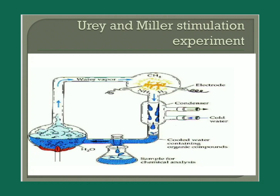On chemical analysis, you can find the amino acids here. The boiling flask releases water vapor which enters the spark chamber, and after passing through the condenser it cools to form organic compounds.